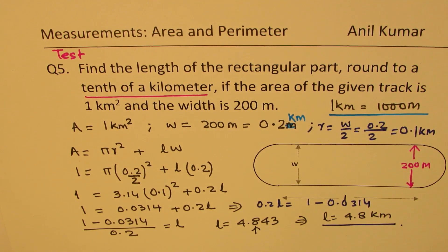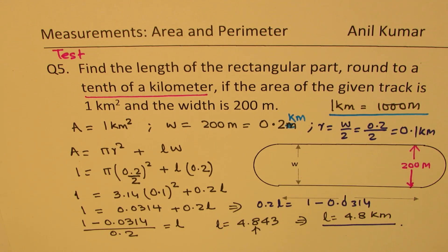I hope the steps are absolutely clear. In this video, we learned how to work with track-type questions where we have a rectangle in the middle and two semicircles on the sides. We found the length for a given perimeter, for a given area, and for other given conditions. I hope that helps. Feel free to write your comments, share your views, and if you like and subscribe to my videos, that would be great. Thanks for watching and all the best.